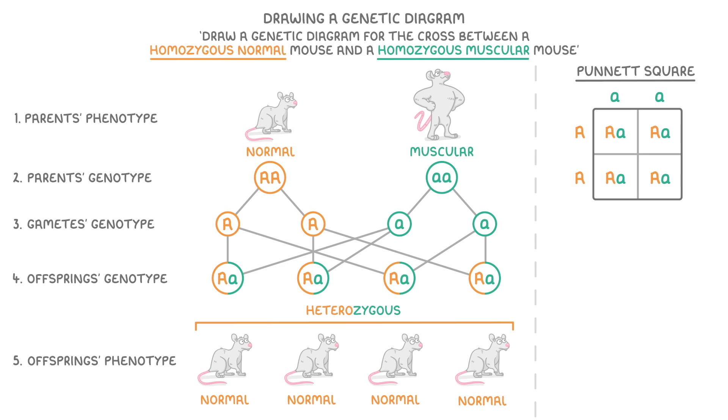In this case though, because we can see that all of our offspring are heterozygous, we know that they'll all have the normal phenotype.